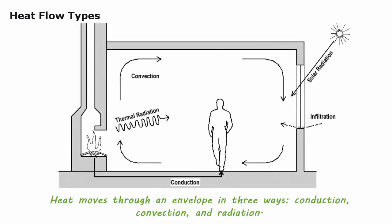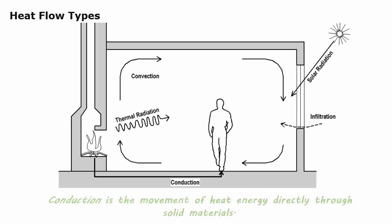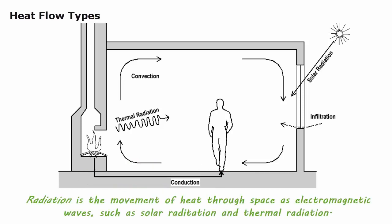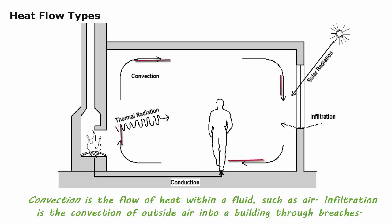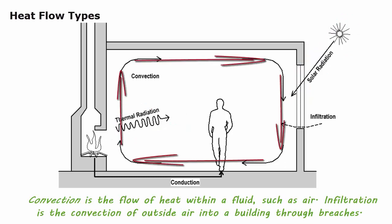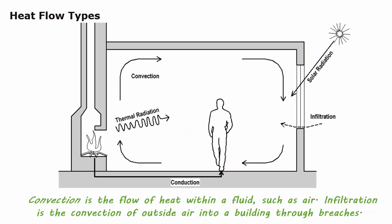Heat moves through an envelope in three ways: conduction, convection, and radiation. Conduction is the movement of heat energy directly through solid materials. Radiation is the movement of heat through space as electromagnetic waves, such as solar radiation and thermal radiation. Convection is the flow of heat within a fluid, such as air. Infiltration is the convection of outside air into a building through breaches.